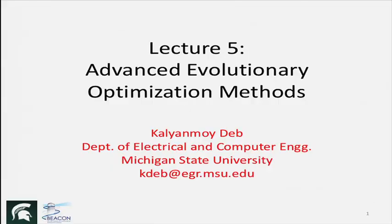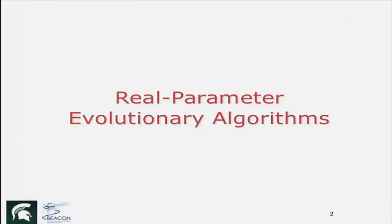We will talk about advanced methods. So far, we only looked at binary coded GA and some theoretical underpinnings of why they should work, and then some example problems where we have applied and showed their broad applicability. Now let us go and see some real parameter evolutionary methods, because in practice we would get mixed integer programming where some of the variables will be real.